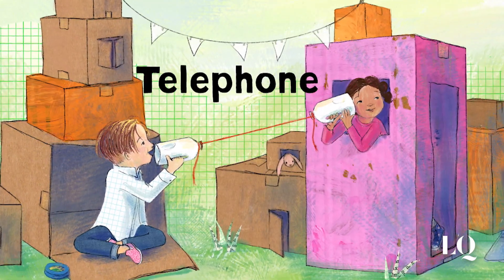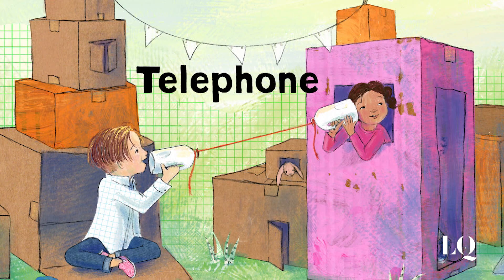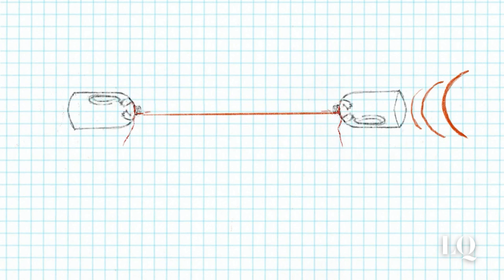Telephone: Quinn and the new kid transform Something Great into a string telephone with the addition of a second milk jug and some scissors. When Quinn talks into one side, their voice creates sound waves that vibrate the bottom of the jug. The vibrations are transferred across the string into the other jug where the new kid can hear what Quinn is saying.